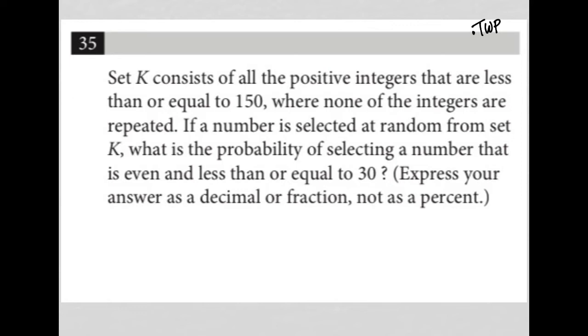So the question says set K consists of all the positive integers that are less than or equal to 150. Okay, so K is basically all the numbers, right? All numbers less than or equal to 150. All the positive numbers at least. Where none of the integers are repeated. Okay, so just each individual number from 1 all the way to 150.